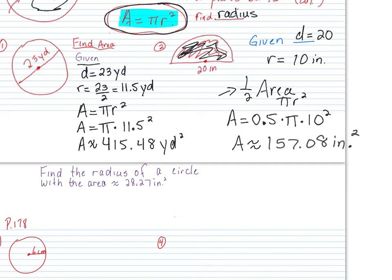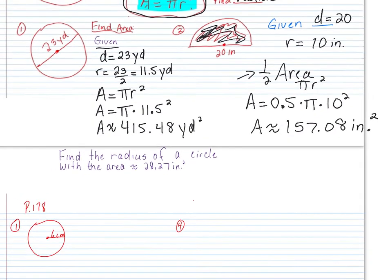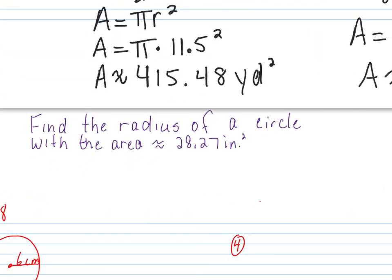Okay, any questions? All right, the next one. It says, find the radius of a circle with the area approximately equal to 28.27 square inches. Everybody have that one?